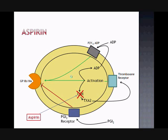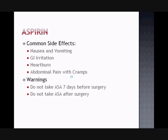TXA2 increases platelet aggregation and vasoconstriction while PGI2 decreases platelet aggregation and causes vasodilation. However, because TXA2 is mainly synthesized in the platelets and platelets do not have a nucleus, they cannot synthesize more protein, and therefore the effect lasts the entire lifespan of the platelet, which is about seven to ten days. Because PGI2 is mainly formed and released from the endothelial cells, which do have a nucleus and can form more proteins to overcome the effect of aspirin, there is more PGI2 left to exert its effects on the platelets, and therefore the ultimate effect is a decrease in platelet aggregation. Some common side effects include nausea and vomiting, GI irritation, heartburn and abdominal pain with cramps. Because of its irreversible effects on platelets, aspirin should not be taken at least seven days before surgery or immediately after surgery.